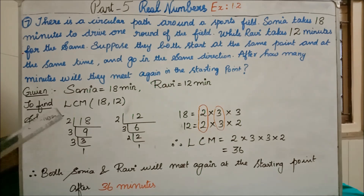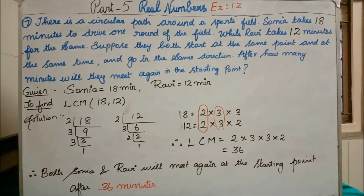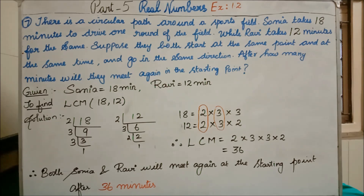Therefore, both Sonia and Ravi will meet again at the starting point after 36 minutes. With this, our Exercise 1.2 is over. I hope you all understood Exercise 1.1 as well as 1.2.